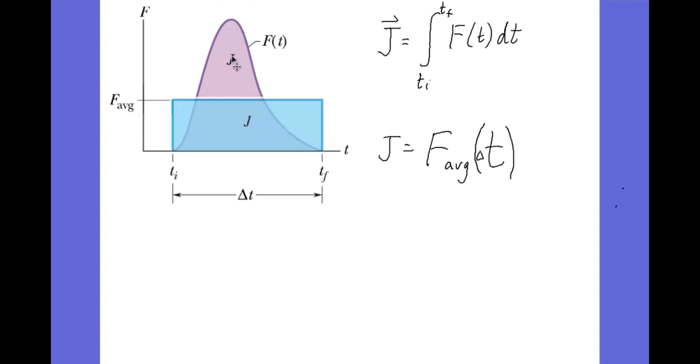And the area under the curve, right? This is what this means. The area under the force as a function of time curve is the impulse. So the area under the curve is the impulse. We could integrate it if we had an equation for that purple curve, or we could just take the area under the graph.